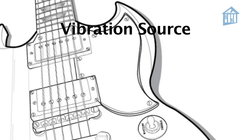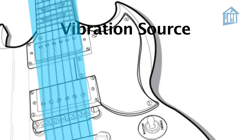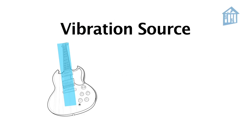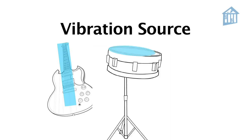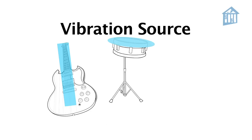First, the vibration source, or what creates the sound — like the strings of the guitar, the top of a drum, or the front of the chime.